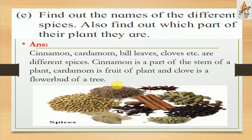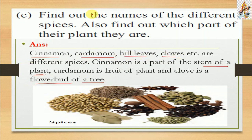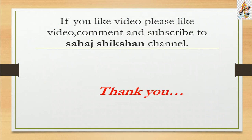Question e: Find out the names of different spices and which part of their plants they come from. The answer is: cinnamon, cardamom, bay leaves, and cloves are different spices. Cinnamon is a part of the stem of a plant. Cardamom is a fruit of a plant. Clove is the flower bud of a tree. If you like this video, please press the like button, comment on the video, and subscribe to the Sahaj Shikshan channel. Thank you.